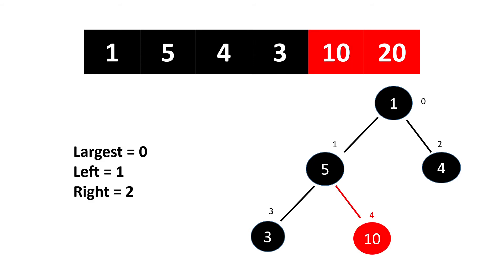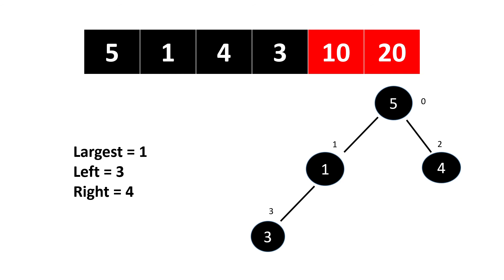Now it is time to replace the root node with the last node and reduce the size of the heap by one. We perform max heapify again: largest becomes index zero, left becomes index one, right becomes index two. The element at index one is greater than at index zero, so largest becomes index one. Four is not greater than five, so we swap between index one and index zero.